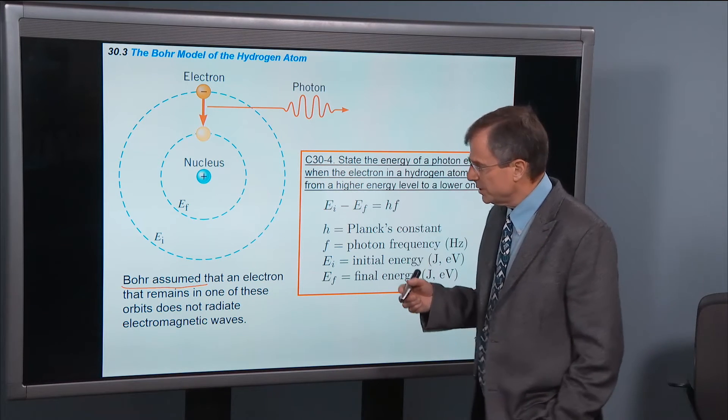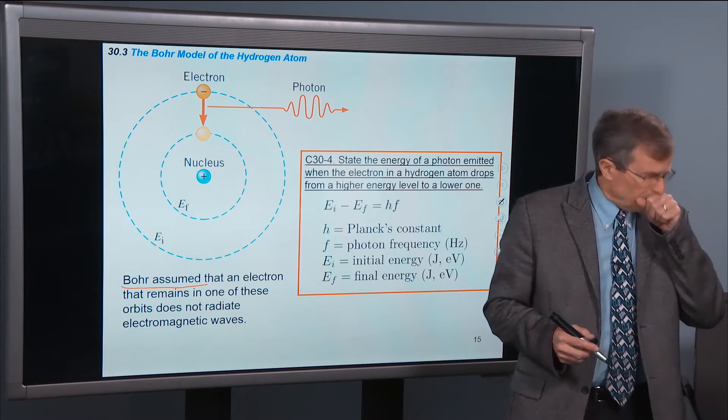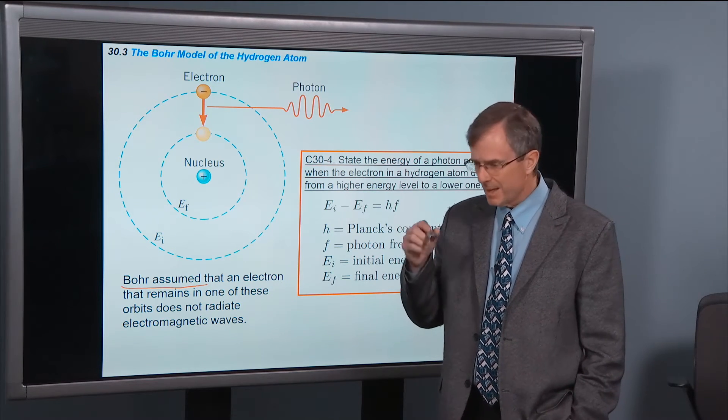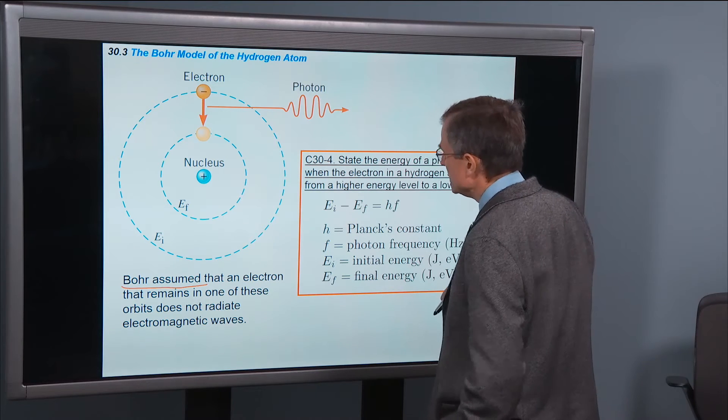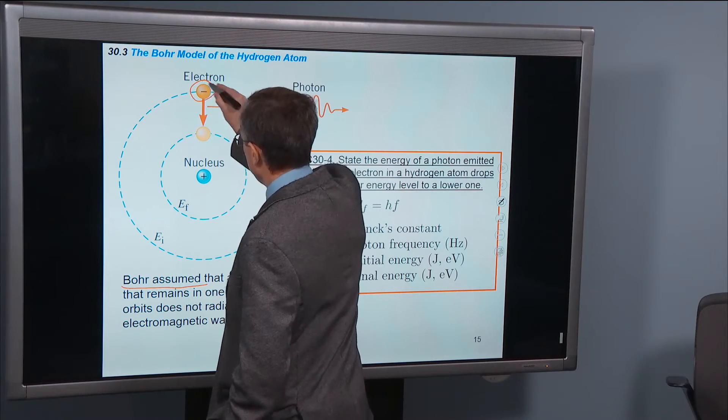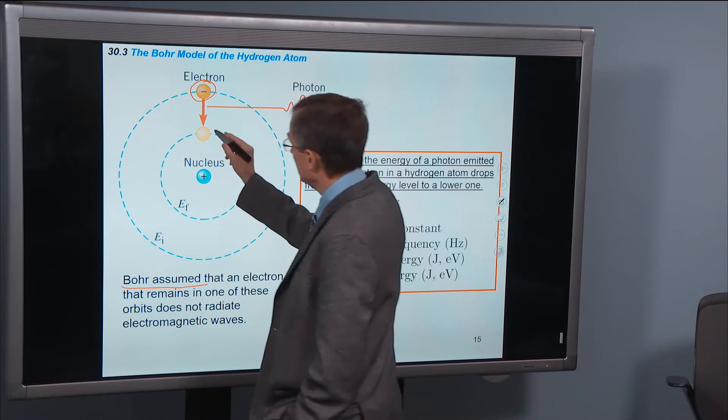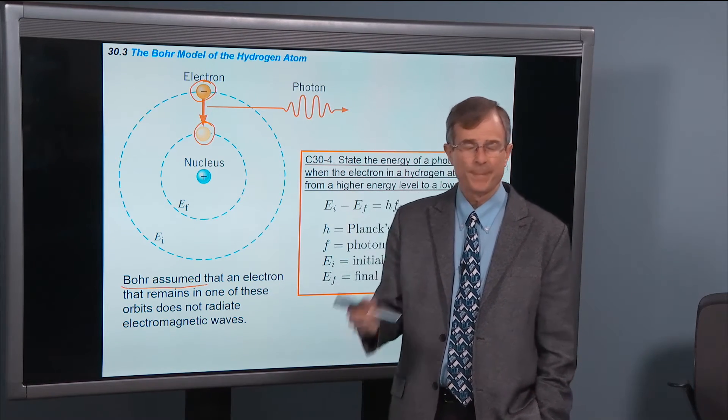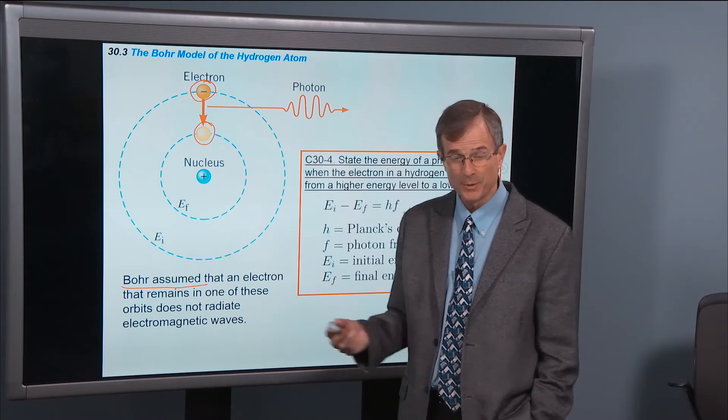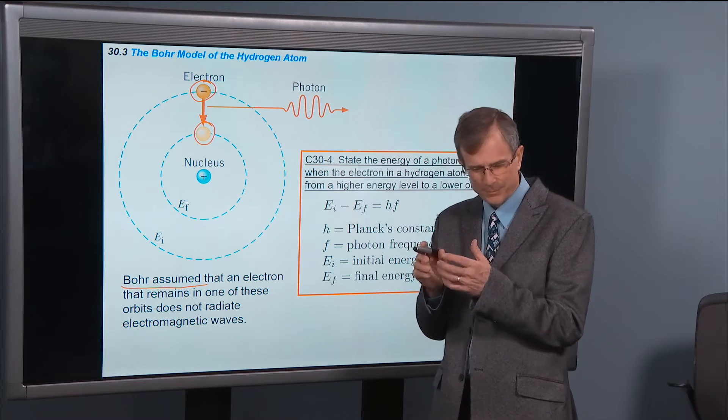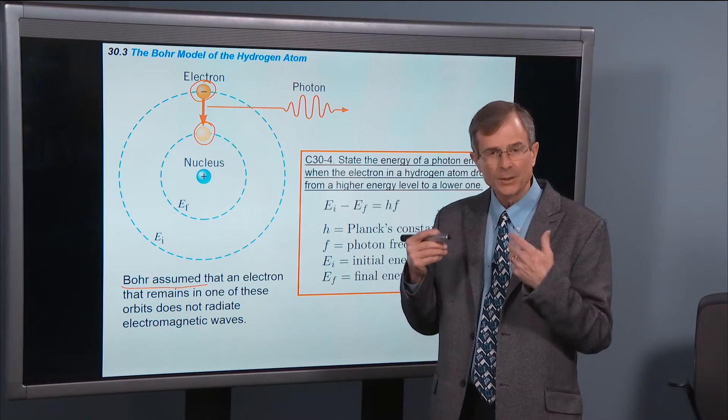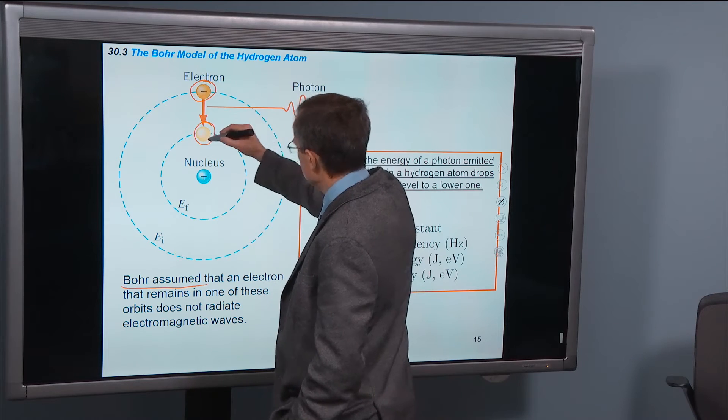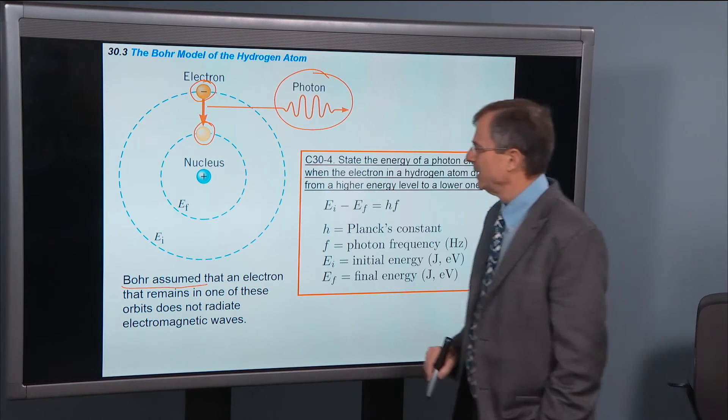He assumed that the electrons can only exist in these discrete energy levels. They can't be between them. And so his idea was that if you go from a higher energy level, further from the nucleus, to a lower energy level, that that process would emit a photon, a packet of light. We've talked already in the previous chapters about certain behaviors of light that make it clear that light behaves like particles. And this is one of those behaviors. So the electron jumps from a higher state to a lower state. It emits a photon of light.